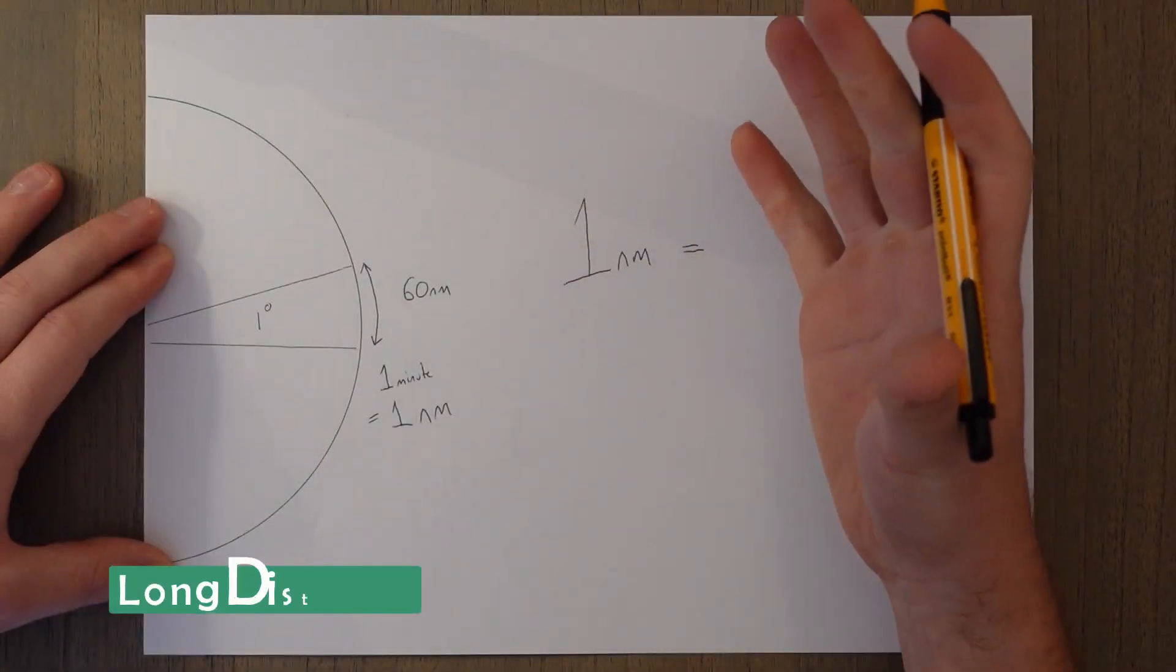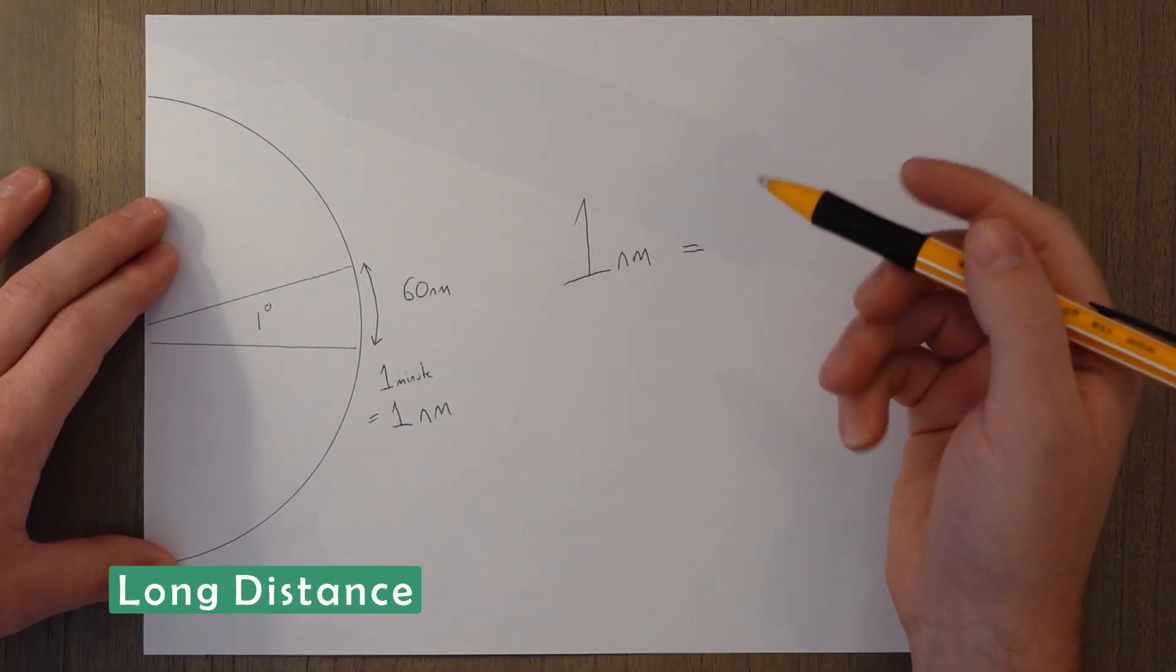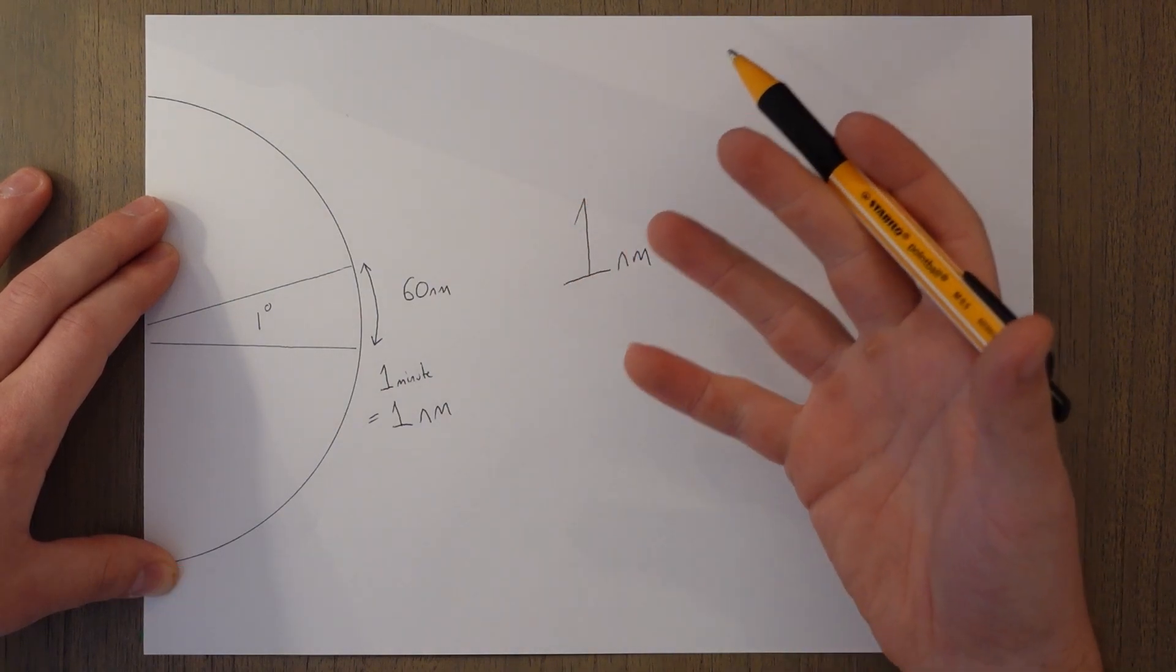For example, in Europe we use feet for altitude. So this class is going to be fairly short but it's basically going to look at the conversions between different units that are used for measuring distance.